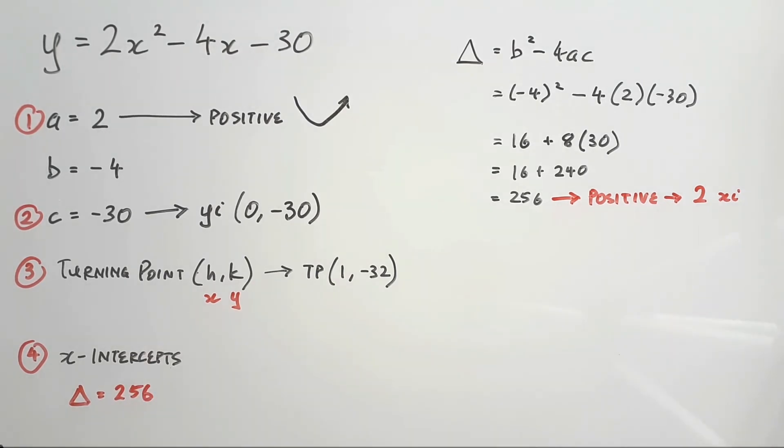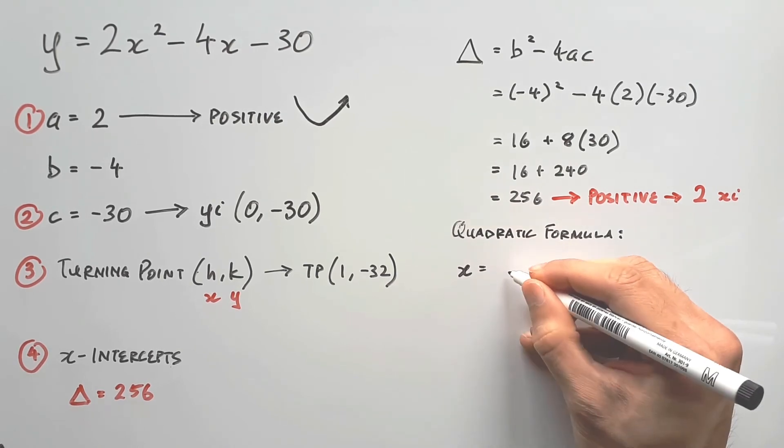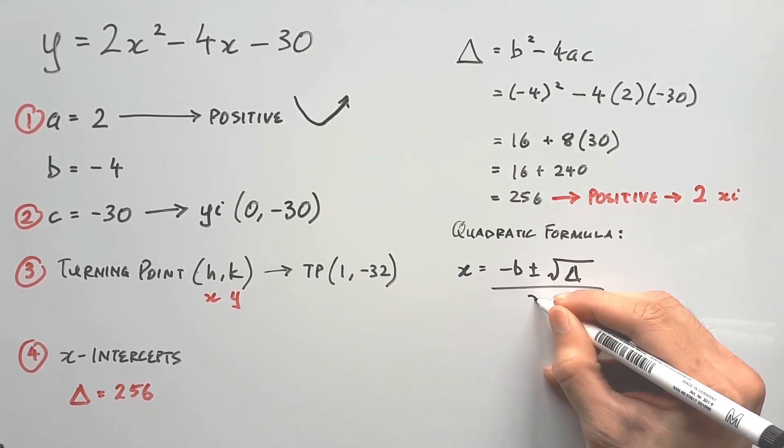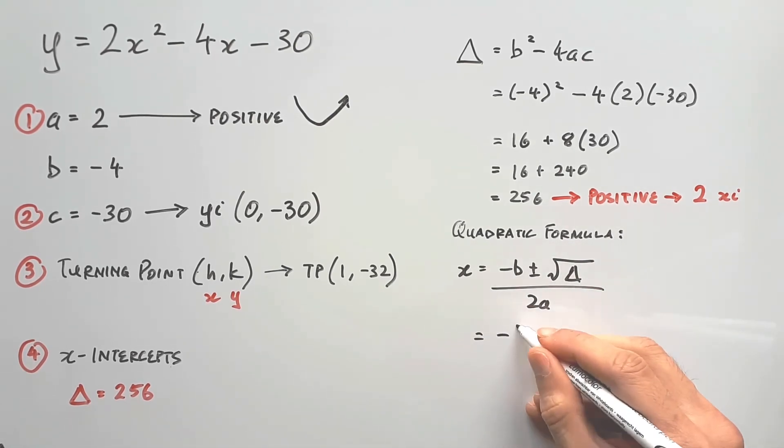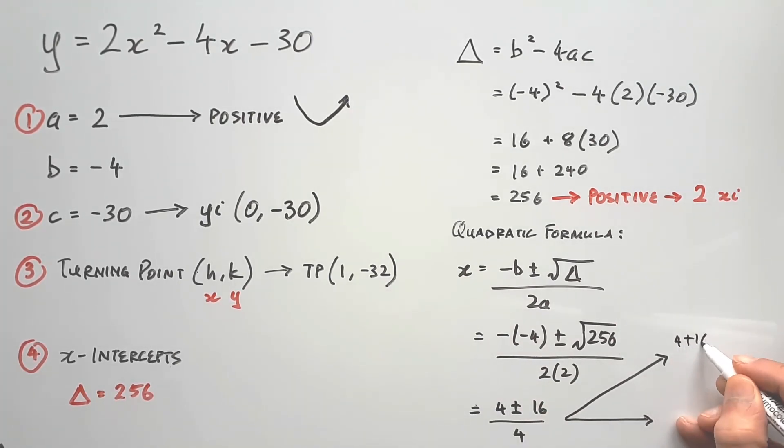Alright, so to find these fellows, we need the quadratic formula of x equals negative b plus minus the square root of the discriminant over 2a. Plug in all that we know and it simplifies to 4 plus minus 16 over 4. This splits into two parts, the plus and minus versions, giving us our 2 x-intercepts, 5 and negative 3.